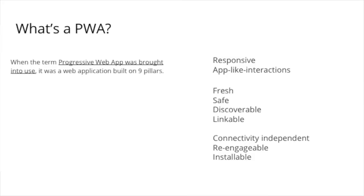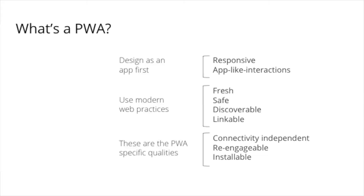When PWAs were conceived and brought into use, they were built around nine sort of pillars. At the time, they said it's like a web application that has taken all the right vitamins, and these nine things are the vitamins that your web application will take to make it a progressive web application.